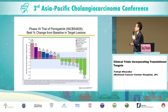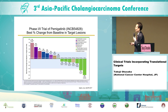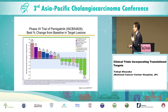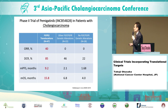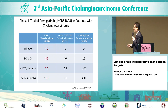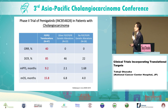This is a result from the phase 1-2 trial of pemigatinib for patients with solid tumors, including intrahepatic cholangiocarcinoma. As you can see, all of the patients with intrahepatic cholangiocarcinoma showed tumor shrinkage, and also durable responses. They then conducted a phase 2 trial, which beautifully demonstrated a 40% response rate, 85% disease control rate, and 9.2 months median progression-free survival in the cohort of patients with FGFR2 translocations.